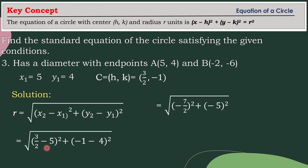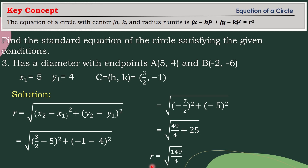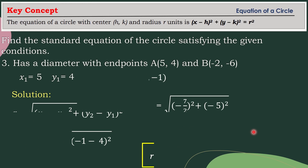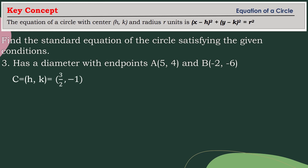The difference of 3 halves and 5 is negative 7 over 2, squared, plus the difference of negative 1 and 4 is negative 5, squared. Simplifying: negative 7 over 2 squared is 49 over 4, plus negative 5 squared is 25. Combining these two constants gives square root of 149 over 4. So that is the radius. The center is (3/2, negative 1) and the radius is equal to the square root of 149 over 4.